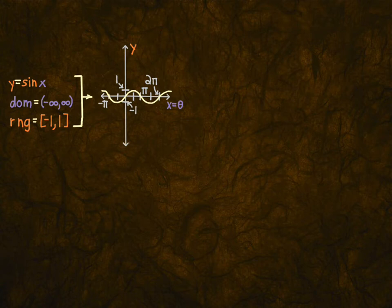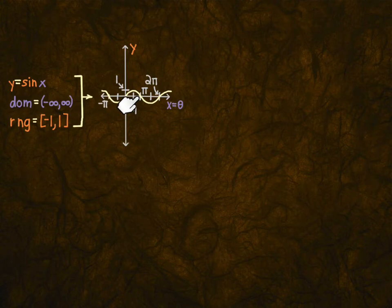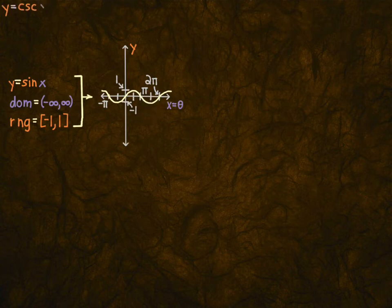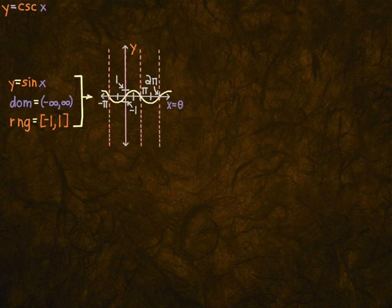Now what we want to do is graph the reciprocal of sine x, which is cosecant x. Cosecant x is 1 over sine x. Notice if you take the reciprocal of 0, there is no reciprocal — 1 over 0, you can't divide by 0. So cosecant must have asymptotes whenever sine is 0. There will be an asymptote at every multiple of π.